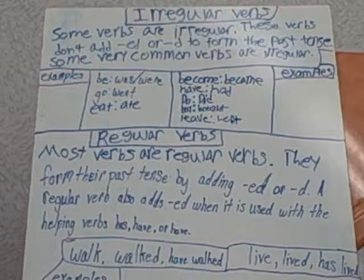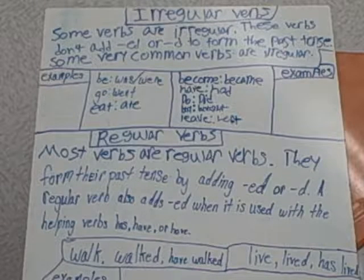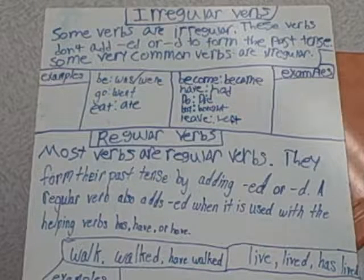Examples of regular verbs: walk → walked → have walked. Live → lived → has lived.